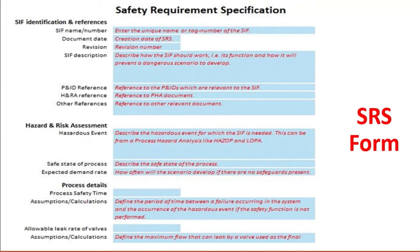The safe state of the process and the expected demand rate — how often this scenario will develop if no safeguards are present — are inputted in this field. Under process details, process safety time is a field where one must mention, for each hazardous event scenario, the time available to return to normal. This defines the period of time between a failure occurring in the system and the occurrence of the hazardous event if the safety function is not performed. If the protection layer does not act and bring the process back to the safe operating limit, the hazard escalates to the next layer of protection.